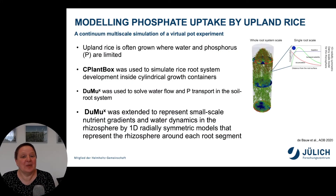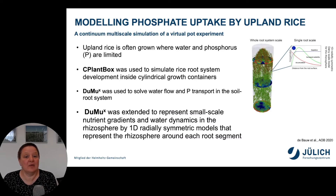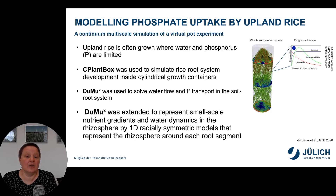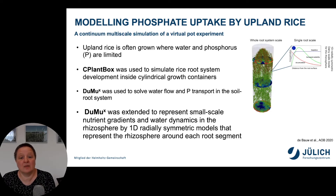The next example is about modeling phosphate uptake by upland rice. It is a continuum multiscale simulation of a virtual pot experiment. The background is that upland rice is often grown where water and phosphorus are limited. In this example, CPlantBox was used to simulate rice root system development inside cylindrical growth containers. Dumux was used to solve the water flow and phosphate transport in the soil-root system. Dumux was also extended to represent small-scale nutrient gradients and water dynamics in the rhizosphere by 1D radially symmetric models representing the rhizosphere around each small root segment.